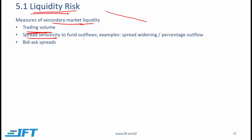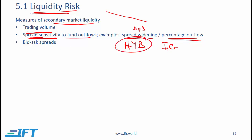The next measure is spread sensitivity to fund outflows. If money is pulled out of the bond market, the risk is that the spread widens. One specific measure is spread widening in basis points divided by the percentage outflow, where the percentage outflow is the total dollar value withdrawn from a fund divided by assets under management. For a given percentage outflow, spread widening tends to be much higher with high yield bonds relative to investment grade bonds, implying that high yield bonds are less liquid.